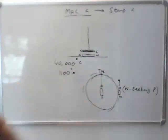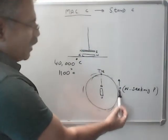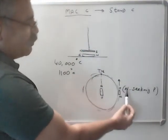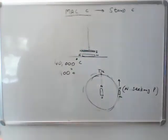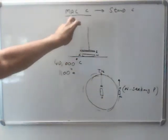So on the ship, we have this small magnet, and it points to the north seeking pole. So you get the direction of north. This is the principle of magnetic compass.